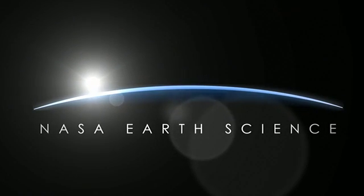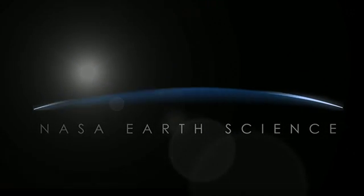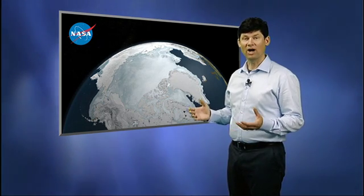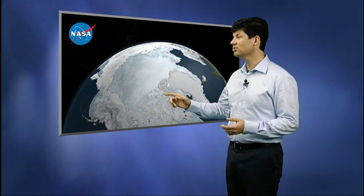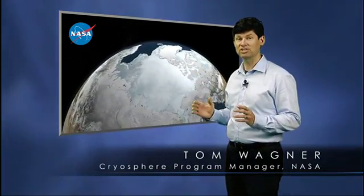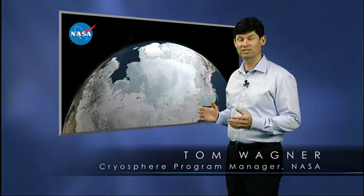Dr. Wagner, can you tell us exactly what sea ice is and what's new about it this year? Sea ice is the ice that forms on the ocean in the winter months. And the image you're looking at right here is a picture of the top of the planet — not a model, not a simulation, not an artist's impression, but actual data from a satellite showing us the sea ice cover on the Arctic Ocean.